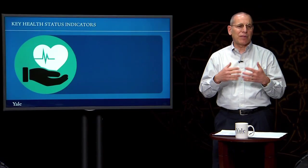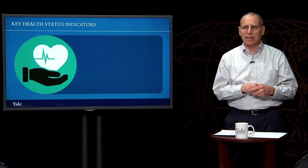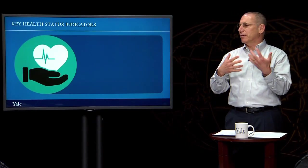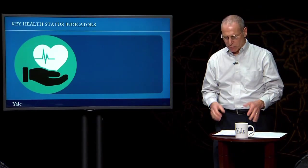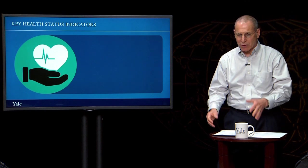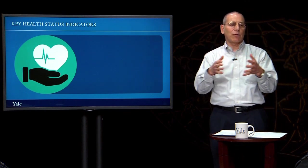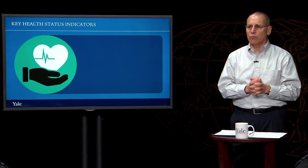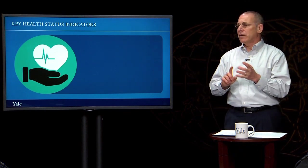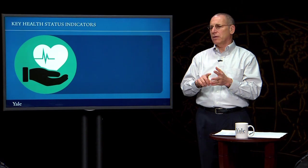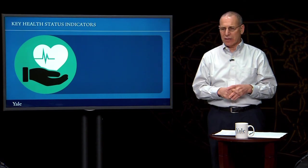If we used 1,000 for maternal deaths, we'd have to use a fraction — it would be really hard to follow. So we measure maternal deaths over 100,000 live births, and we measure neonatal, infant, and under-five child deaths over 1,000 live births.